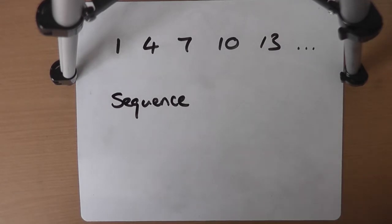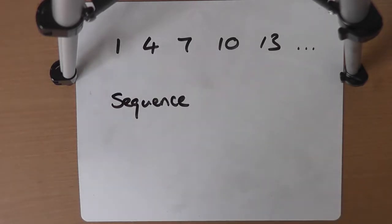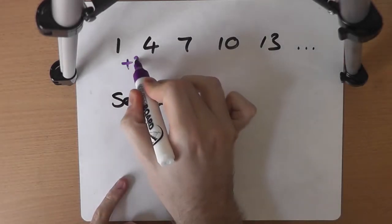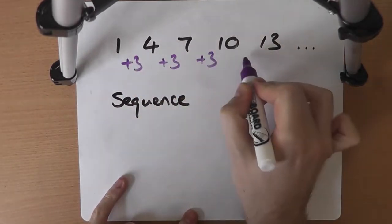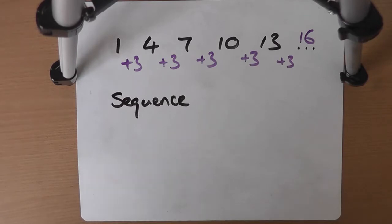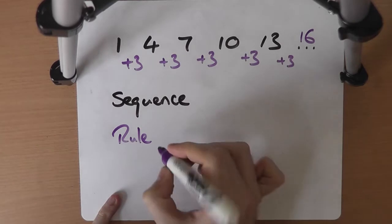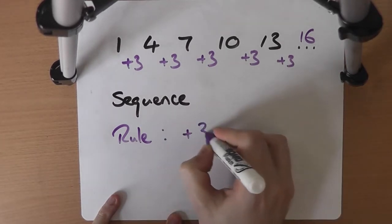The next number in the sequence would be 16. How do we know? Because this is a sequence, there is a set pattern. If something has a set pattern, it is a sequence. If something is a sequence, then it has a set pattern. The set pattern this time: every time we go from one number in the list to the next by adding 3. So the next number in the list would be 16. The rule — the way that these numbers are generated — is to add 3.